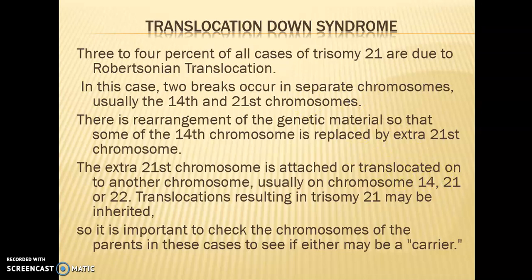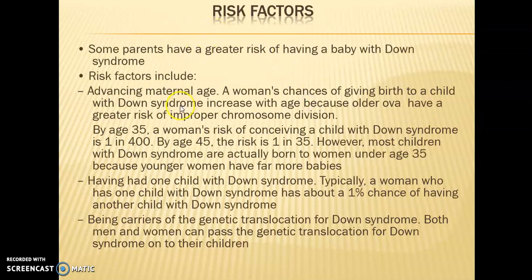Regarding risk factors: some parents have a greater risk of having a baby with Down syndrome. The cause is not fully definite, but medical scientists have identified certain risk factors. One key risk factor is advancing maternal age — a woman's chance of giving birth to a child with Down syndrome increases with age, because older eggs have a greater risk of improper chromosome division.